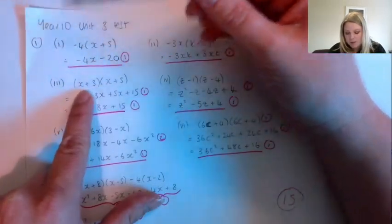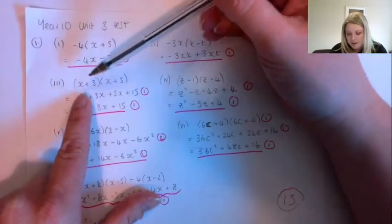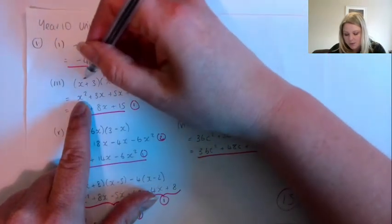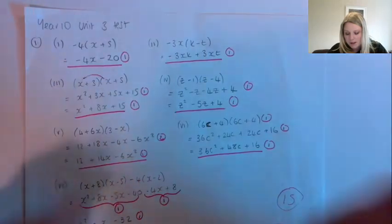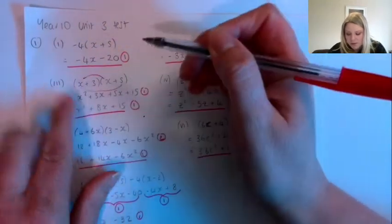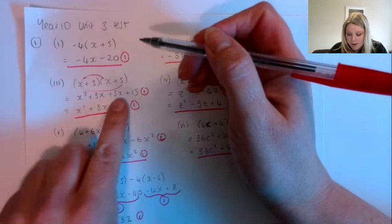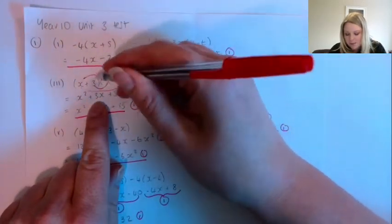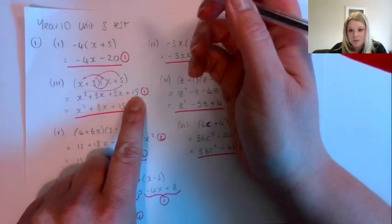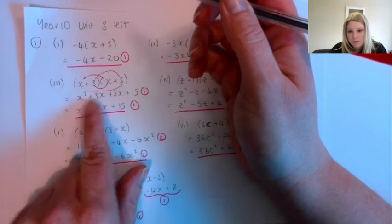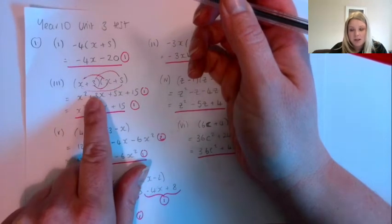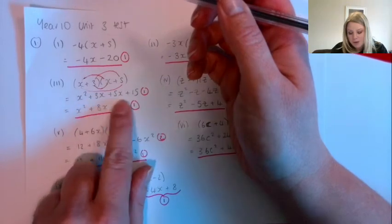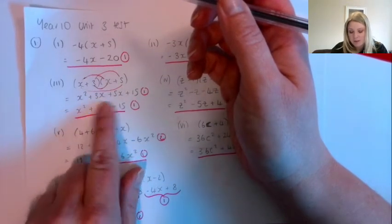For double brackets I would use FOIL or the smiley face method. So x multiplied by x gives me x squared — that's the first terms multiplied. Then outer: x multiplied by 5 gives me 5x. Inner: 3 multiplied by x gives me 3x. And last: 3 multiplied by 5 gives me 15. We've got an x squared term, two x terms, and a number. We can gather the x's together — 3x plus 5x gives us 8x. So that's our final answer.